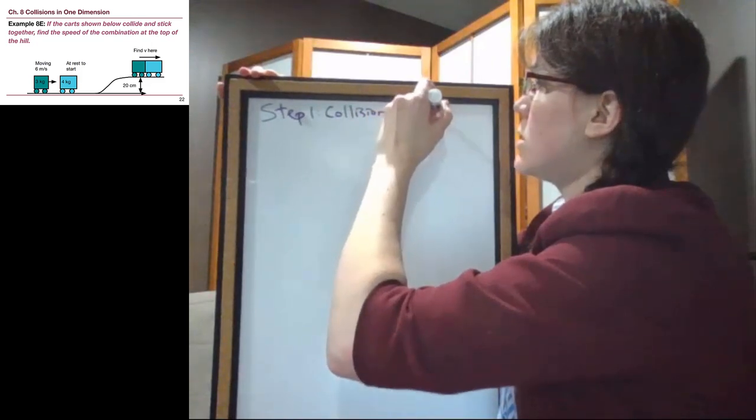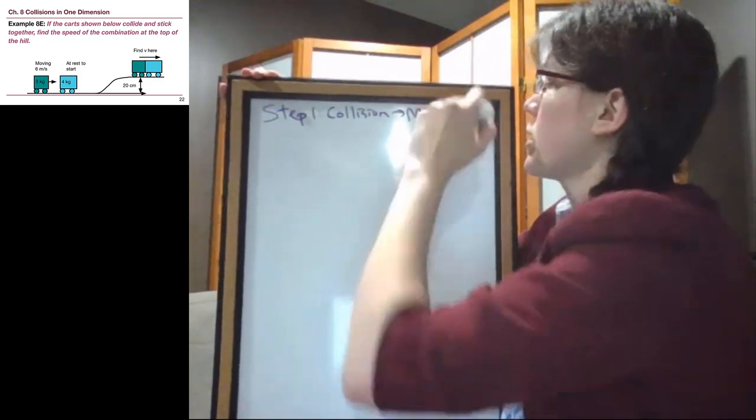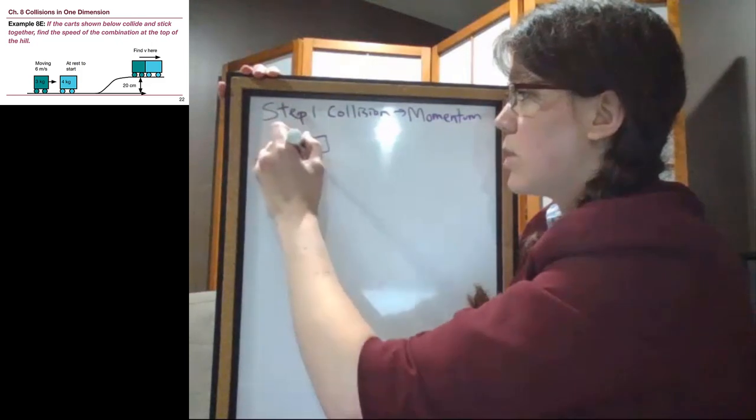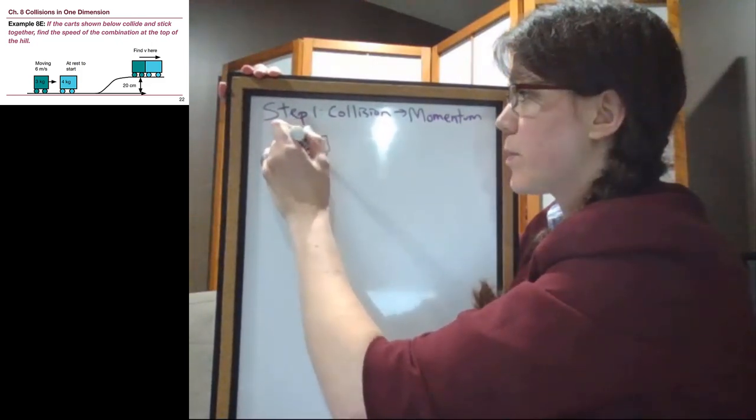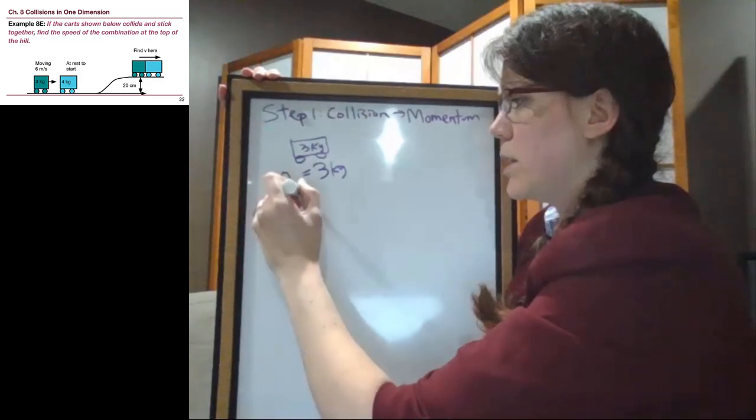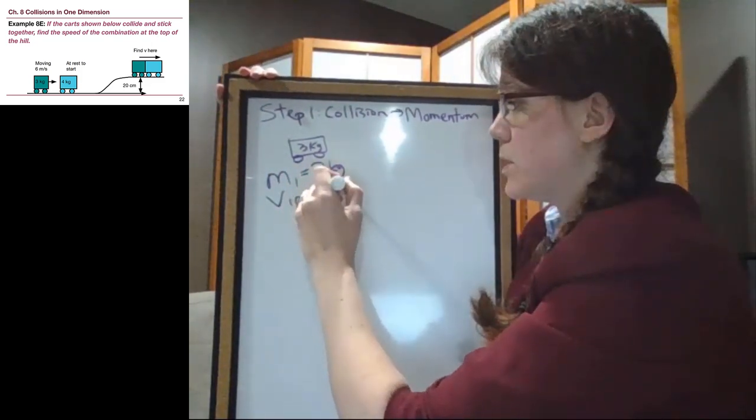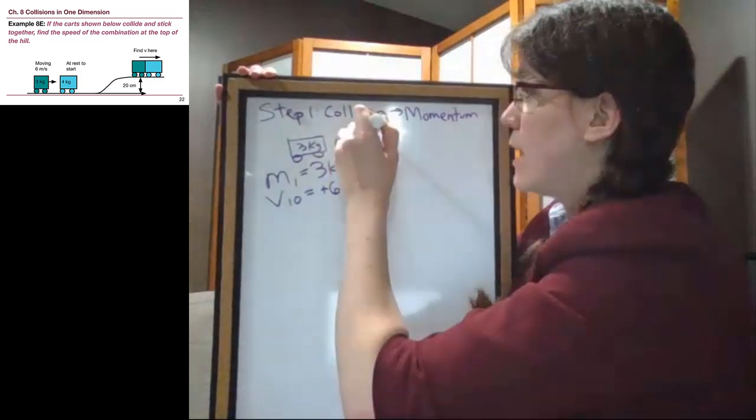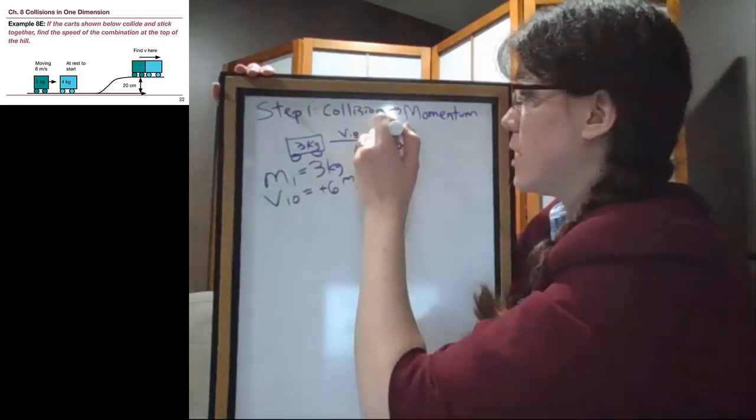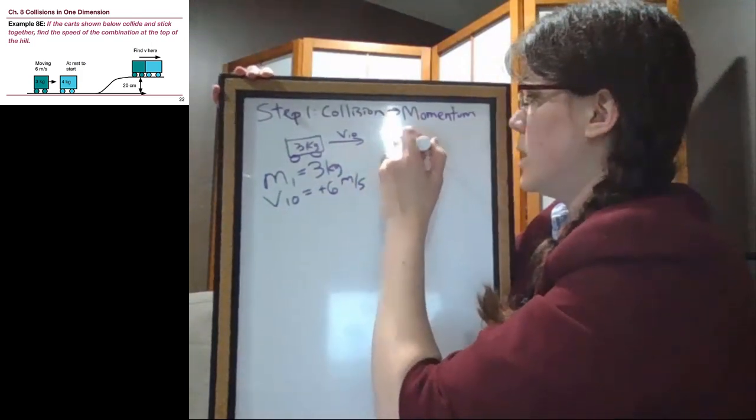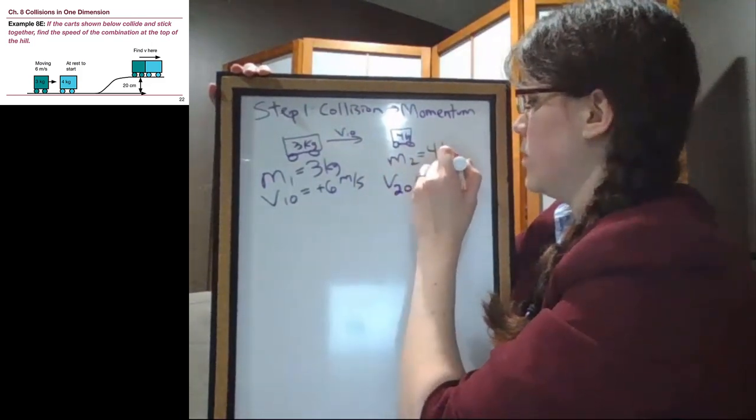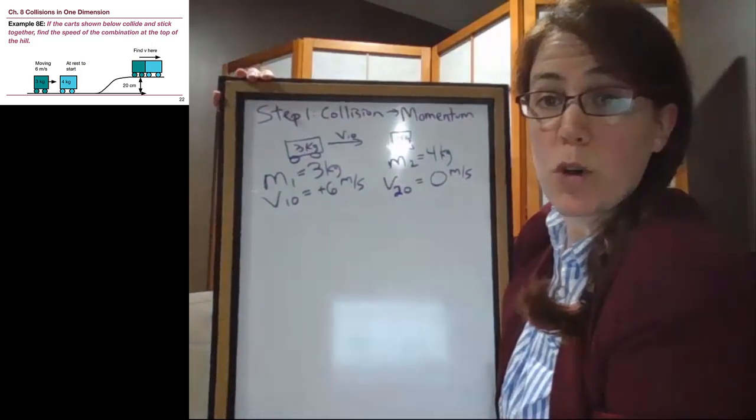which means that momentum equation is going to be used in that first step. So the first step doesn't involve the hill at all. It is just this cart that is 3 kilograms. We can call that M1 is 3 kilograms. V1 initial is positive 6 meters per second. And the 4 kilogram block is starting at rest. So M2, the 4 kilogram block, has an initial velocity of 0 meters per second.